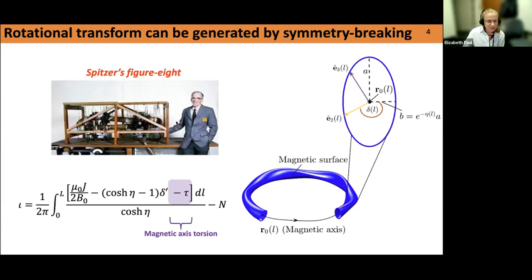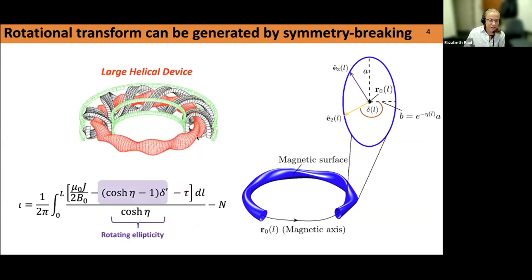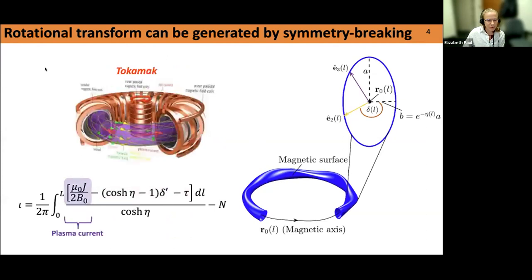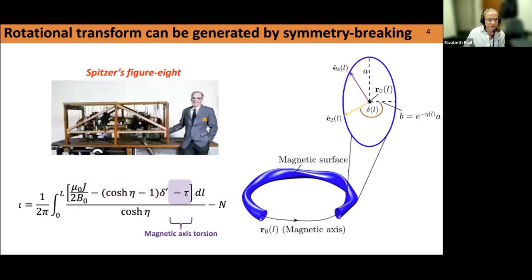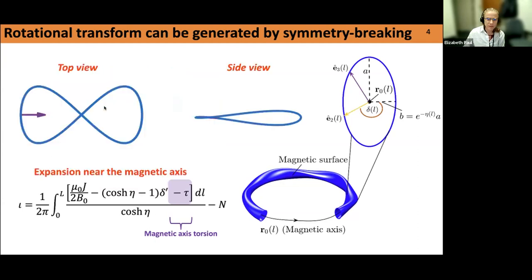To drive rotational transform without having current in the plasma, there are generally two ways, and both require breaking toroidal symmetry. With a current in the plasma you can keep your torus axisymmetric. As soon as you want a configuration without current, you start to break the toroidal symmetry. A stellarator is a device that generates rotational transform without driving current in the plasma, but through 3D shaping instead.